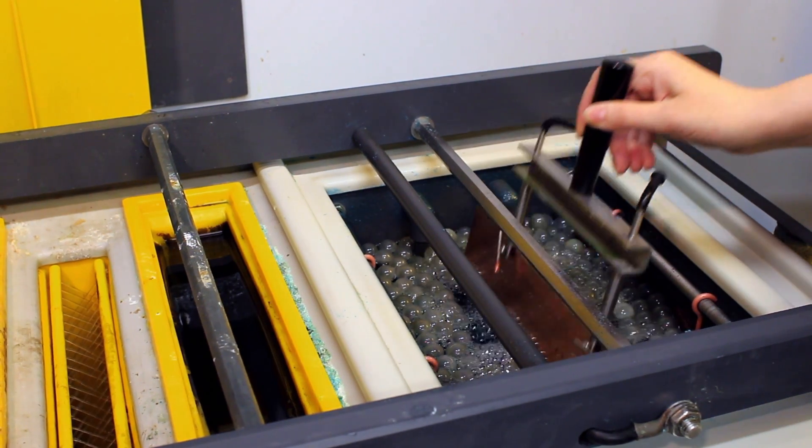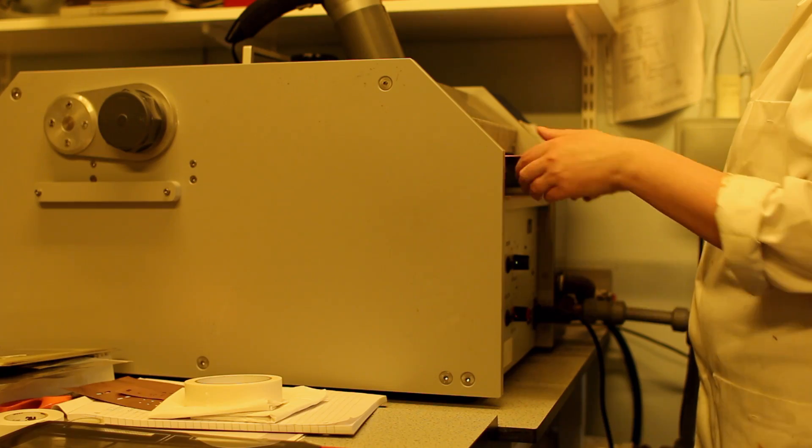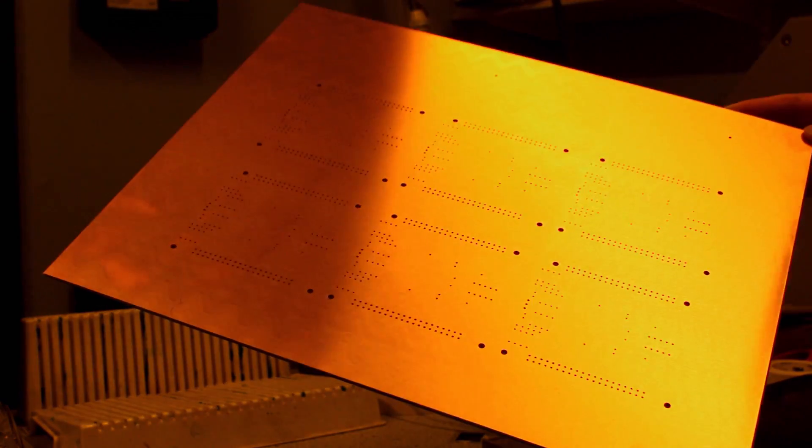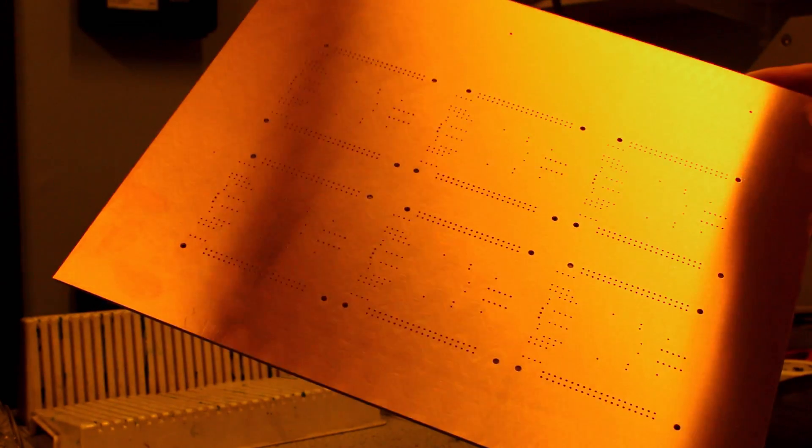After plating, the board is washed and put through the scrubber again to polish the surface of the copper making sure it's clean. It's then visually inspected to make sure the plating process was a success.